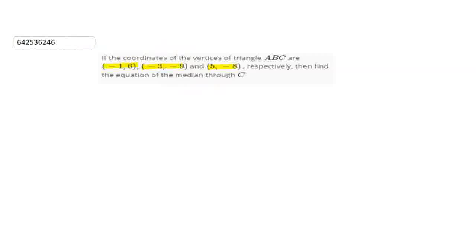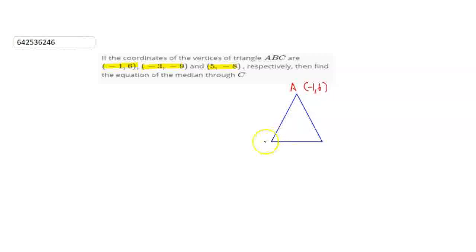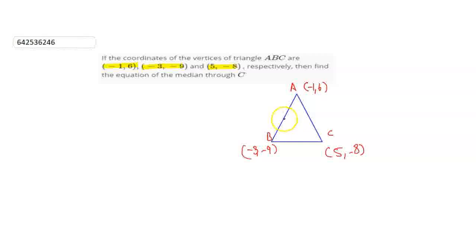For this, first we will draw a triangle. Let this point be A(-1, 6), this point be B(-3, -9), and this point be C(5, -8). Now, we have to find the median through C, which will be this line. This median will divide line AB into two equal parts. So, let this midpoint be D = (x, y).